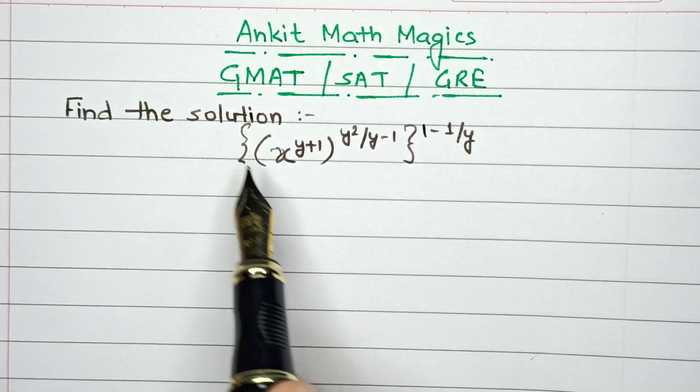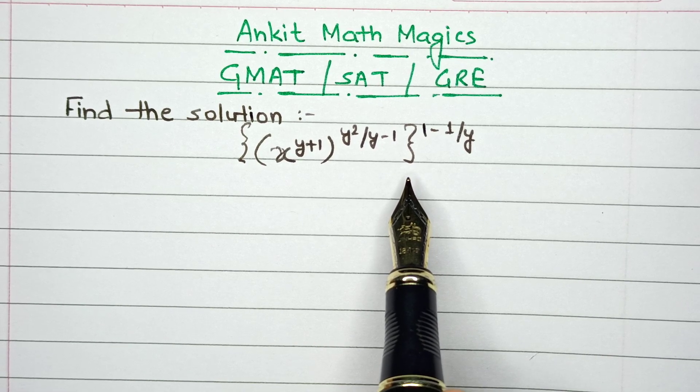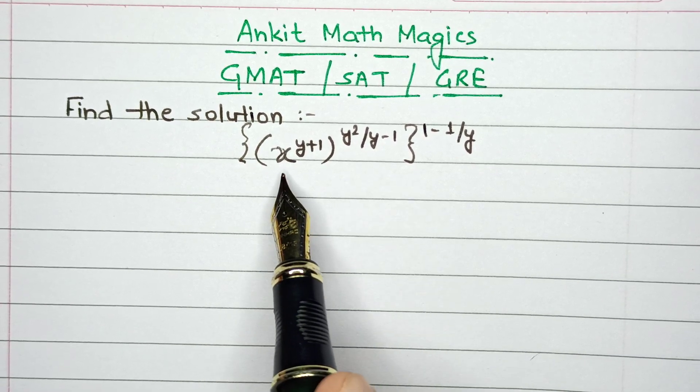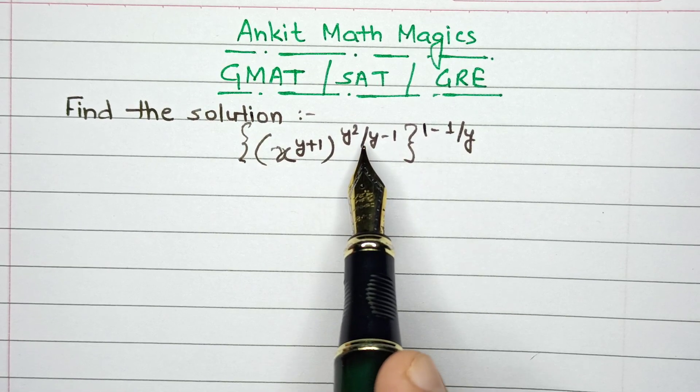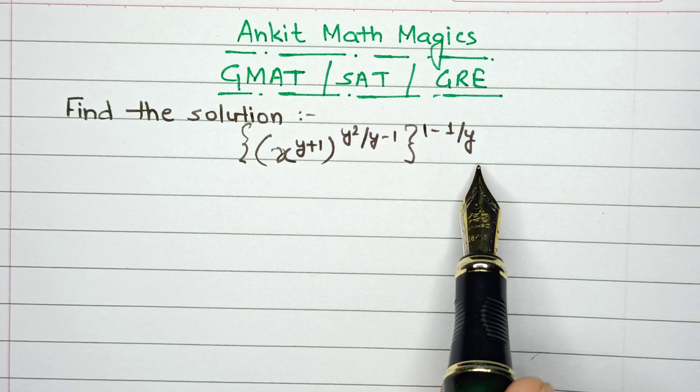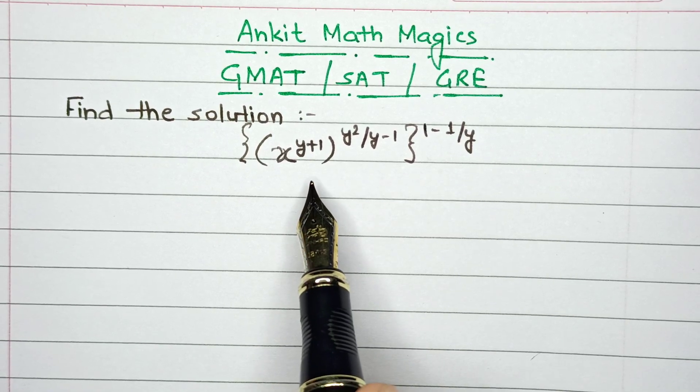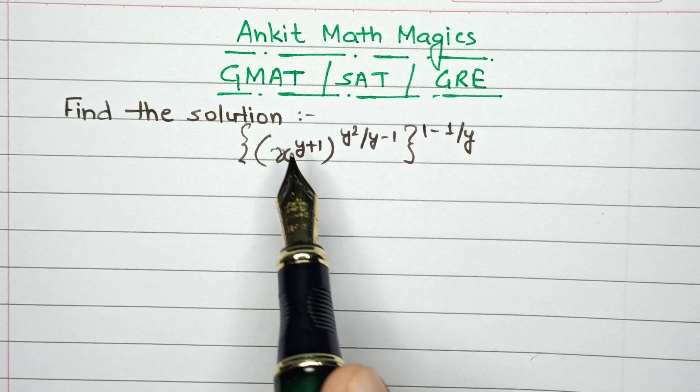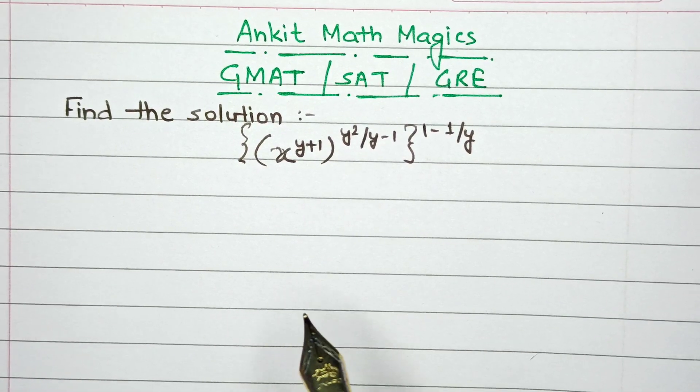In this question, we'll find the solution to a problem based on exponents and powers. We have x raised to the power (y+1) raised to the power (y²/(y-1)) raised to the power (1-1/y). Questions like these are often asked in GMAT, SAT, and GRE entrance exams, and they're also useful for math olympiads.